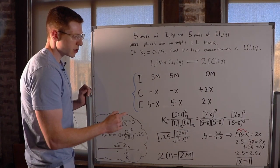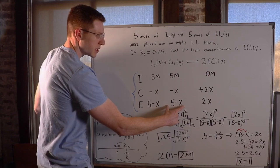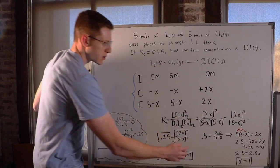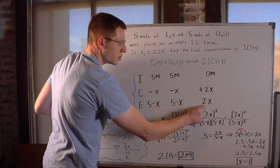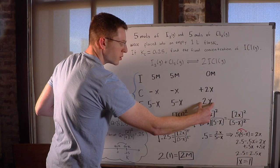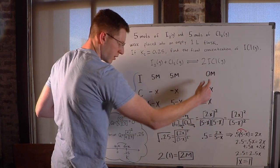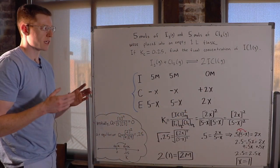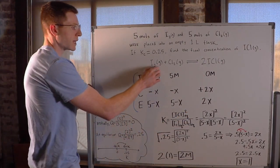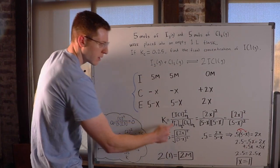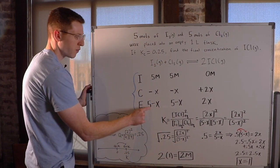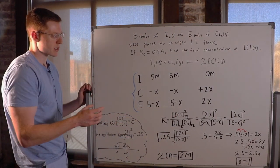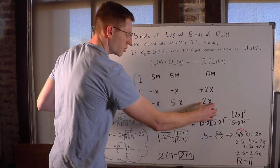Once you find X, plug it back into each equilibrium term. If X equals 1, then 2 times 1 equals 2, so the equilibrium concentration of ICl is 2 molar — that's our answer. We can also find the equilibrium concentrations of I₂ and Cl₂: both are 5 minus 1, which is 4 molar. So overall, the equilibrium concentrations are 4 molar I₂, 4 molar Cl₂, and 2 molar ICl.